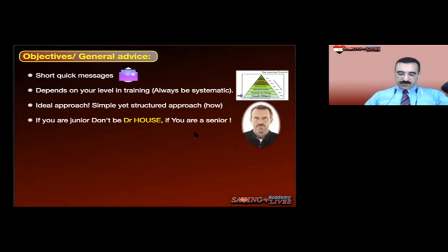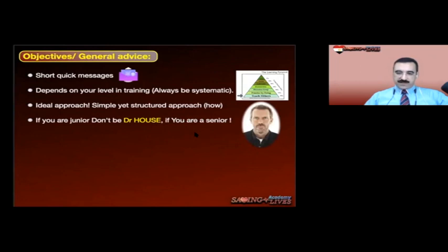If you are a junior doctor who has watched Dr. House, please don't be Dr. House. Don't focus on the rare pathologies — start from the basics. And if you are a senior, please don't look for the rare either. Common is common. Once you exclude all common scenarios, then you can start looking for rare disease, maybe 10-15 days after the patient's admission.